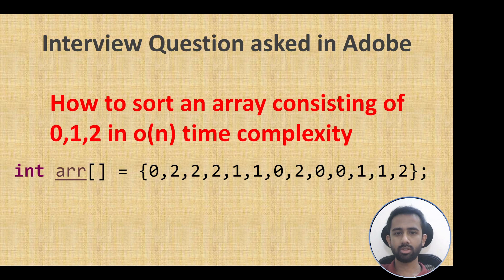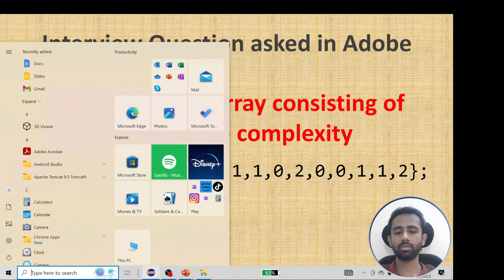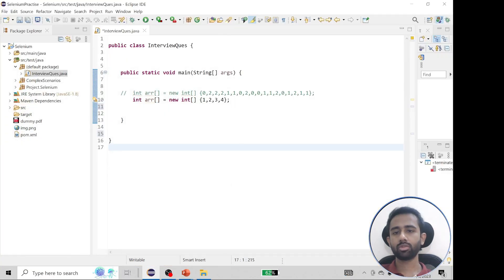Hey, hi everyone, welcome to this session. My name is Somit and today we are going to discuss one more important interview question. The question says that we need to sort an array consisting of 0, 1, and 2 in order of N time complexity. If you see on my screen, one array is given consisting of 0, 1, and 2. Let me open my Eclipse editor.